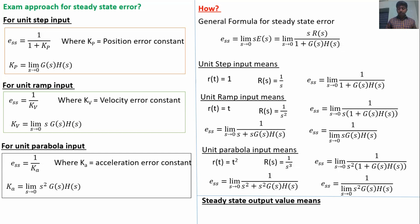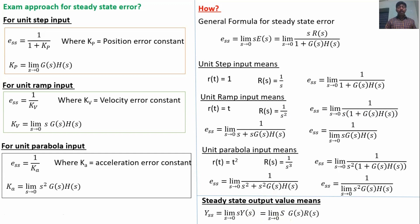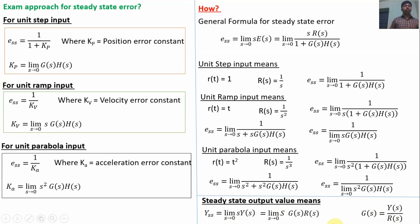If our objective is to find the steady state output Y_ss (not error), we use: Y_ss = limit S→0 of S·Y(S). We write Y(S) = G(S)·R(S), since G(S) = Y(S)/R(S) for a unity feedback system. Just apply the input and transfer function values to get the steady state output. If the objective is to find steady state error, use the exam approach formulas.